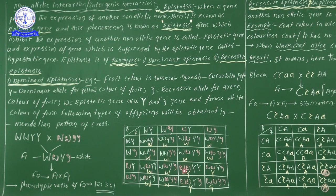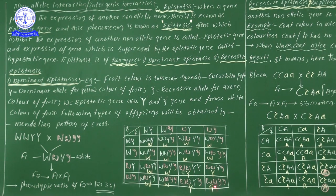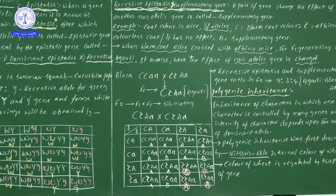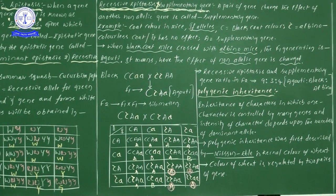Small w small w with at least one capital Y gives yellow color. And small w small w with small y small y gives green color. So in dominant epistasis, the phenotypic ratio is 12:3:1.